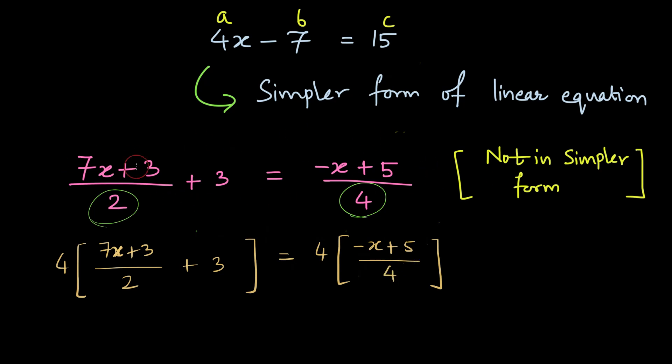Now after we multiply both the sides by the LCM, a very interesting thing happens. This annoying denominator that is appearing in the left hand side and also the right hand side disappears.